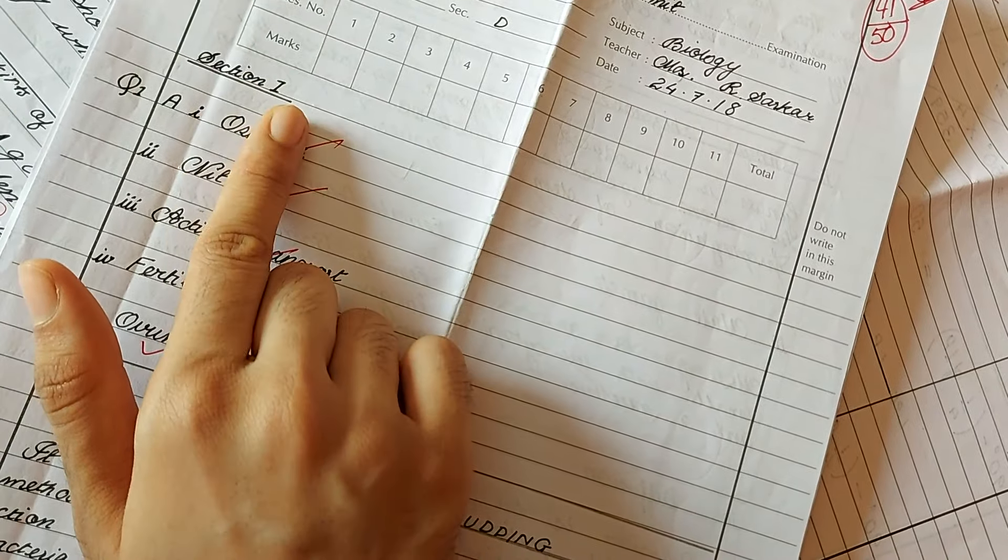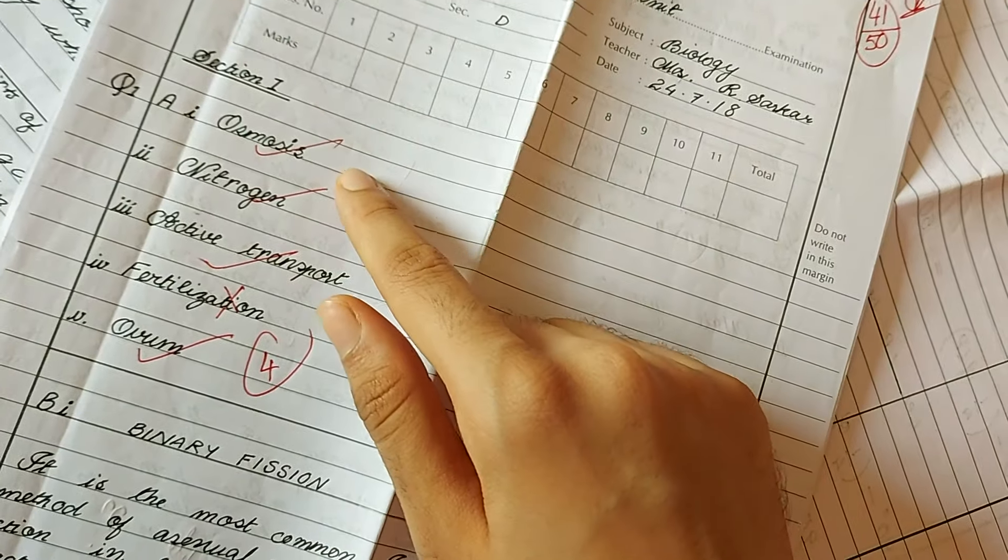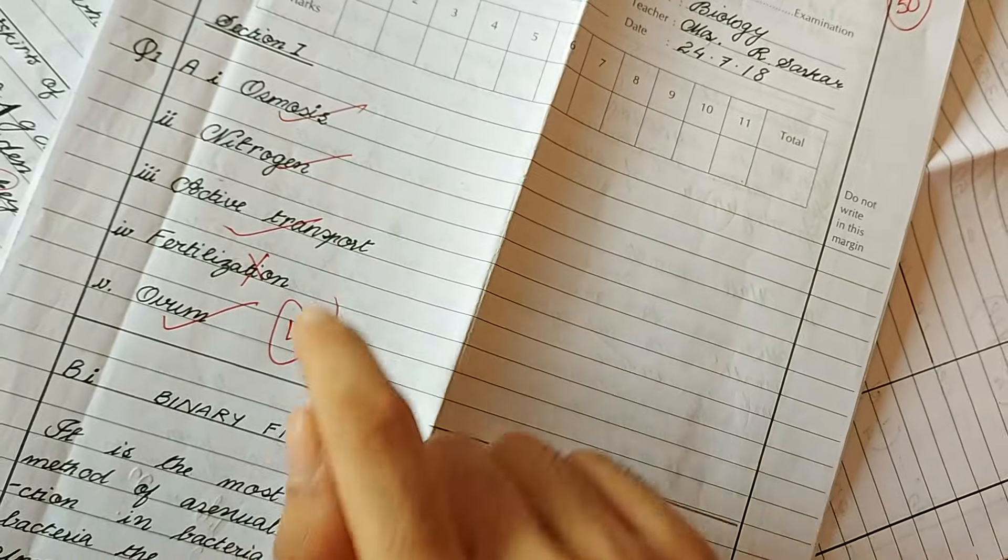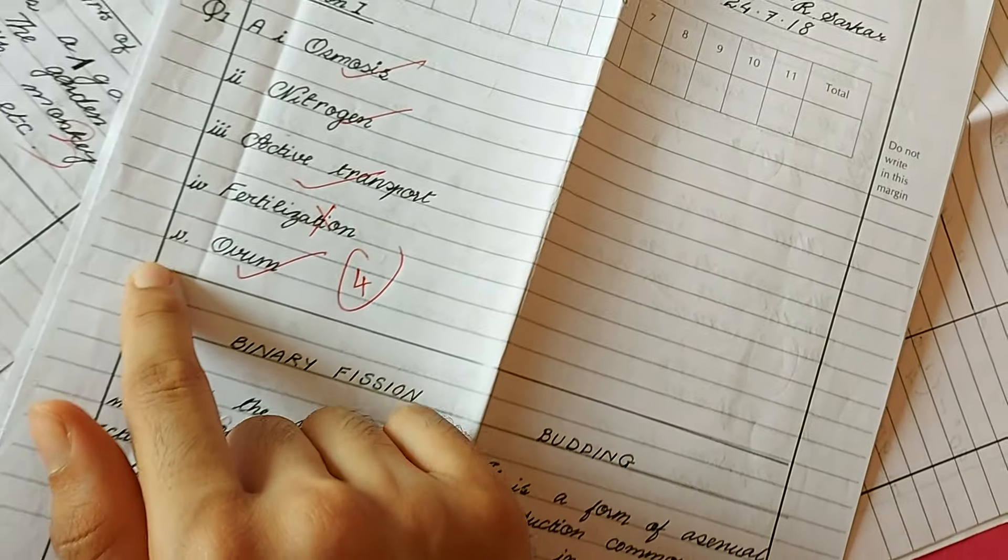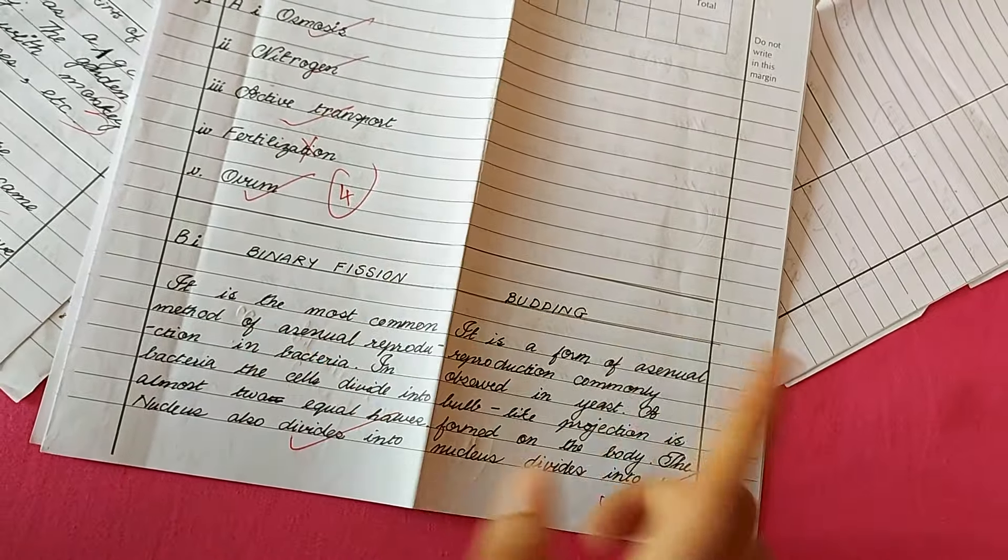Always try to attempt section-wise. For one-word answers, I will always leave a line between each answer. Write it very neatly. Numbering is very important because if you don't number, you will not get marks at all, even if your answer is correct.